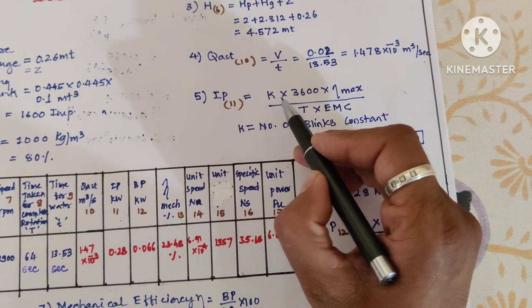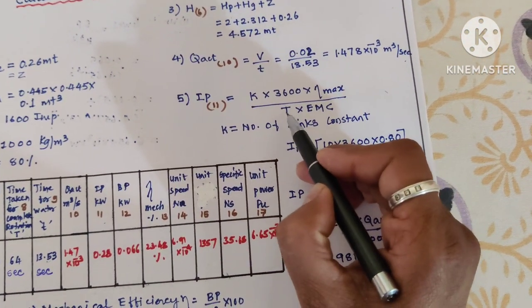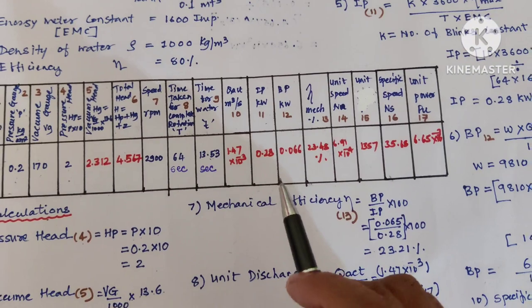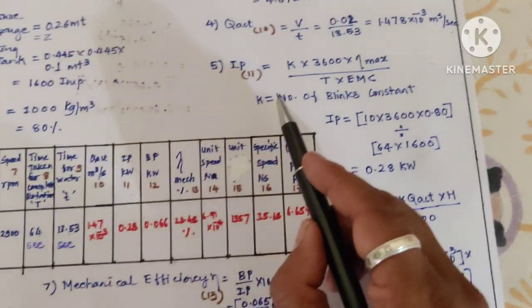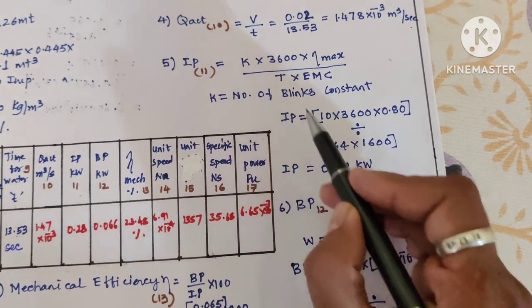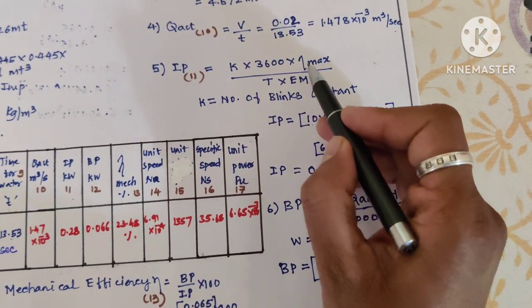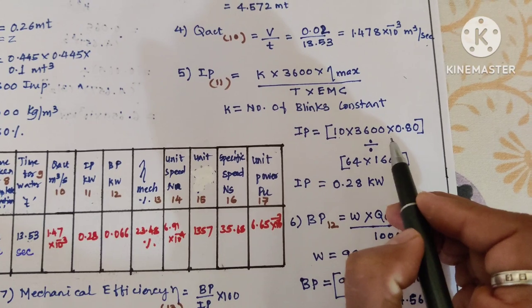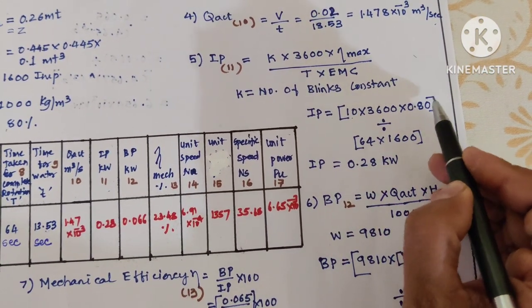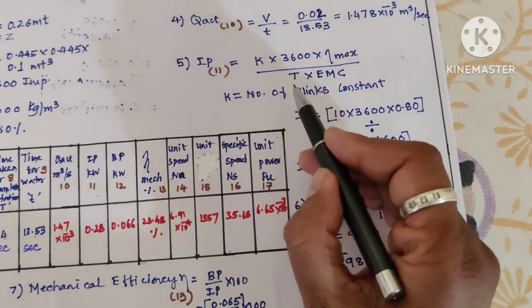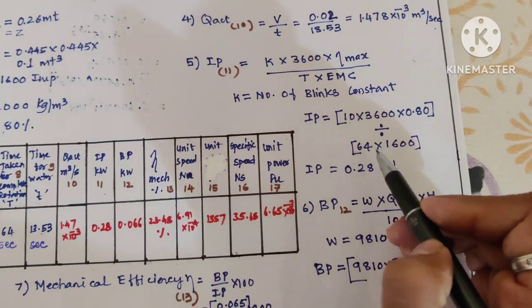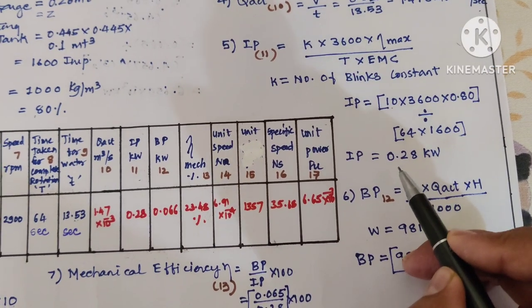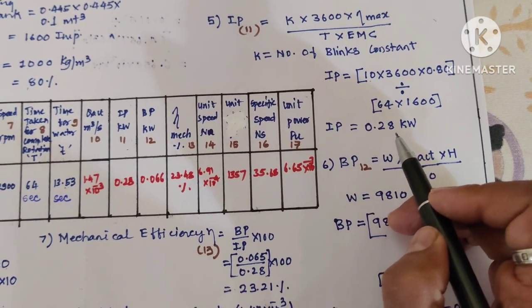Next we will go for IP. The formula is k × 3600 × efficiency / (T × EMC). K is the number of blinks, which is 10. 3600, efficiency is 80% but I'm writing 0.80. Divided by T (64 seconds) into 1600, which is the energy meter constant. We get indicated power as 0.28 kilowatt.